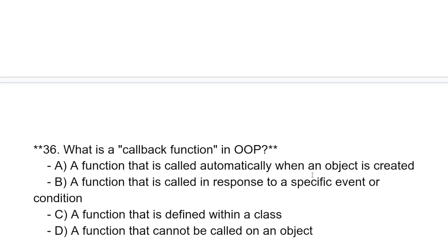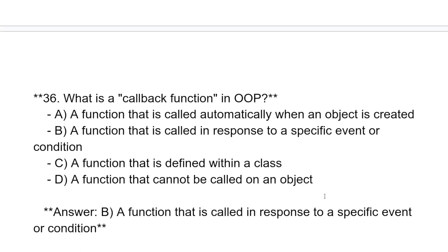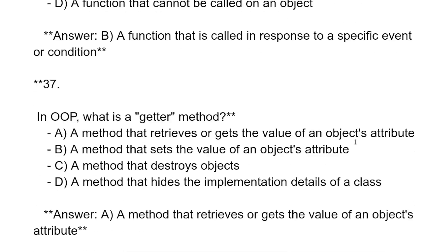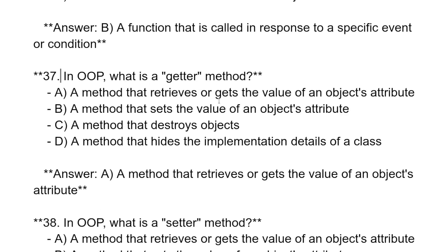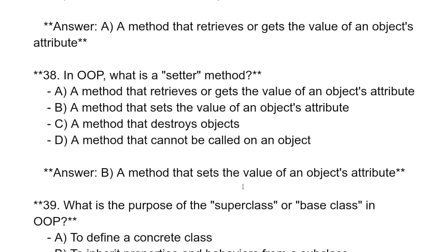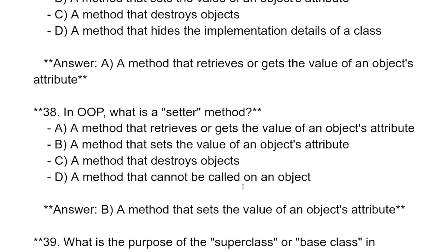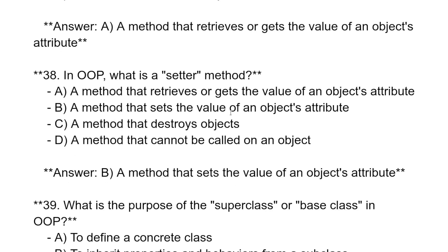What is the callback function in OOP? A function that is called in response to a specific event or condition. What is the getter method in OOP? A method that retrieves or gets the value of an object's attribute. What is the setter method in OOP? A method that sets the value of an object's attribute.